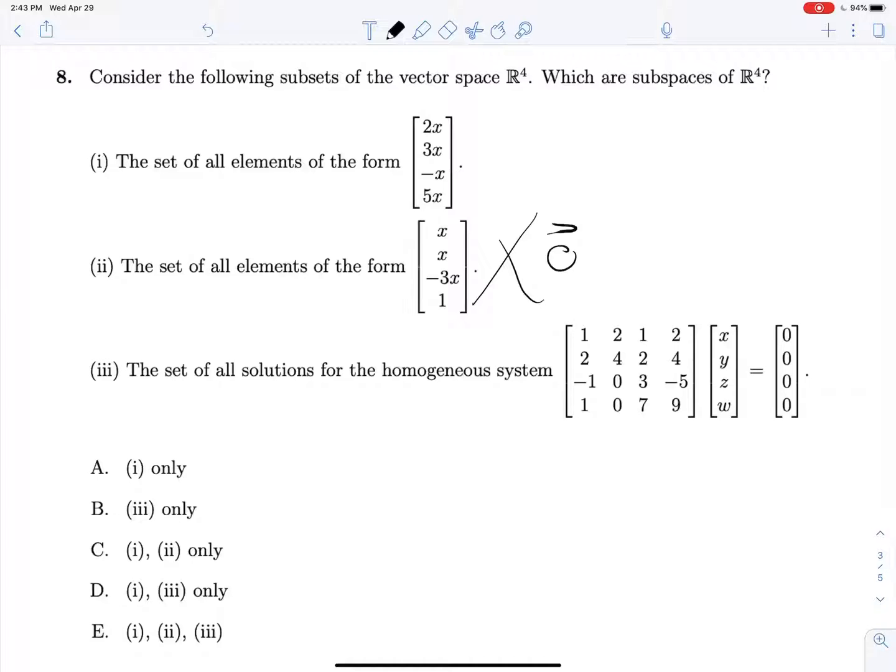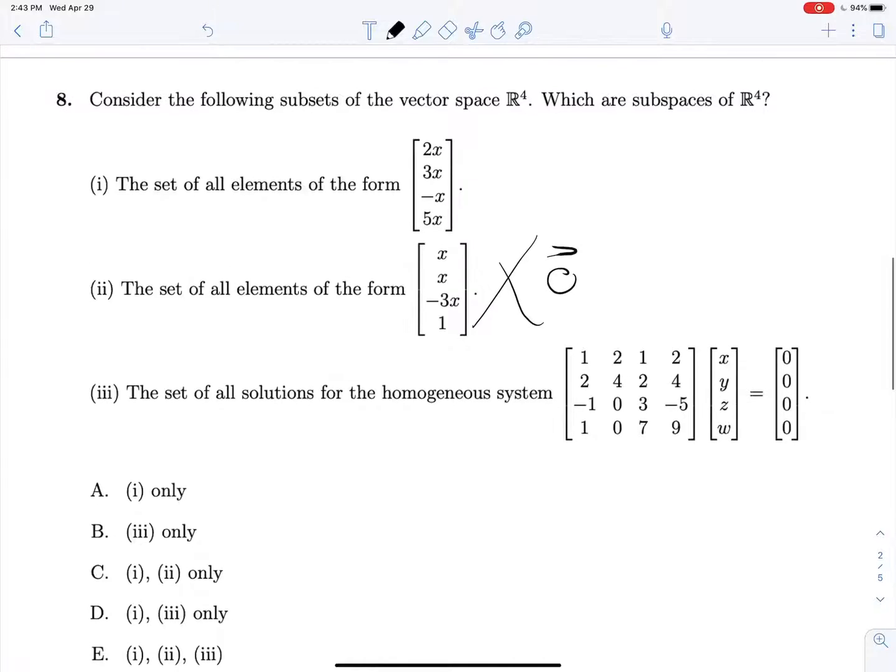What about 3? Well, that's just the solution of Ax equals zero. And we know that this set will be a subspace of R to the number of columns that we have. And we're looking for a subspace of R4. So this is perfectly fine here.